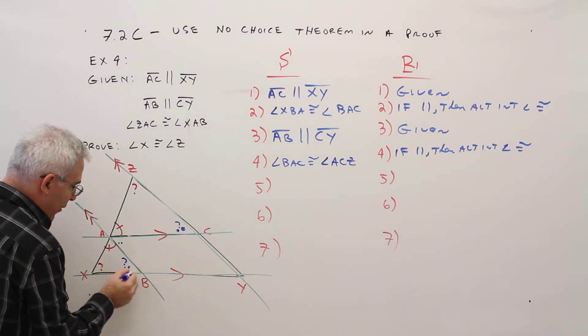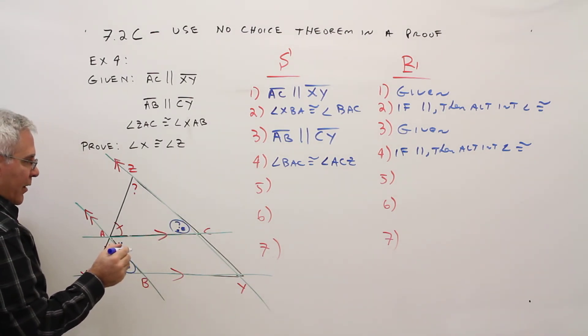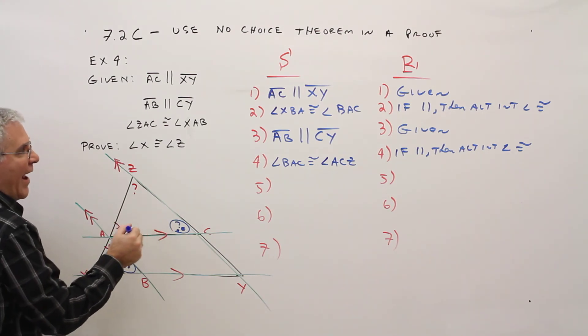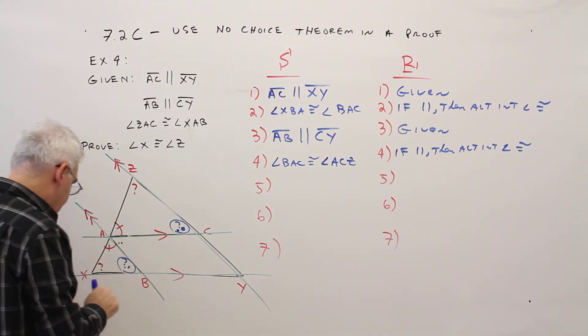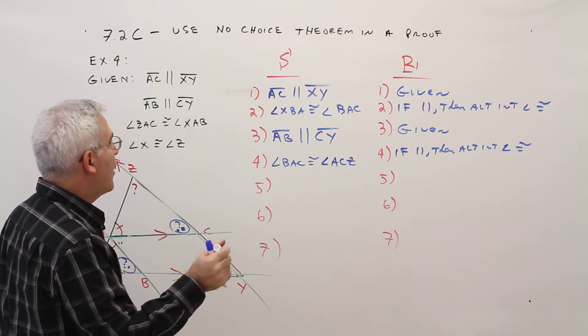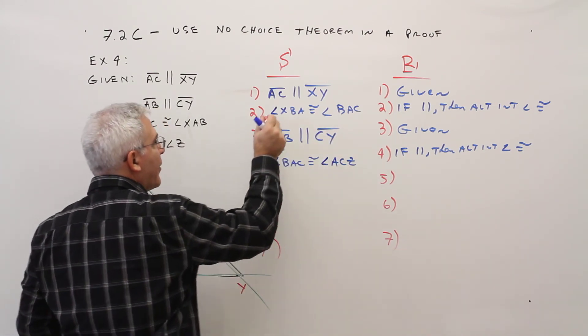So ultimately what I want to try to do is get those two to be congruent. So I could use some transitive now. Let me just show you how that's going to work. I've got this listed twice. That's going to be my in-between.